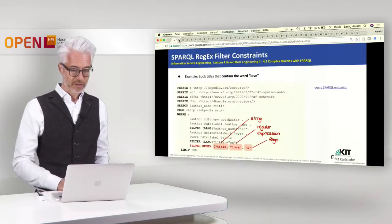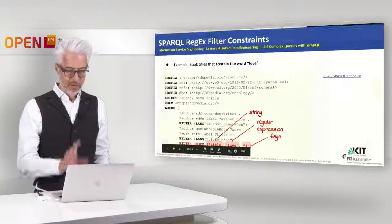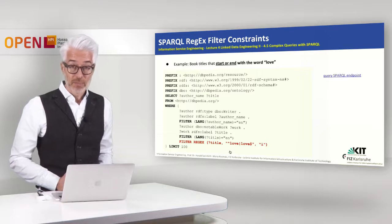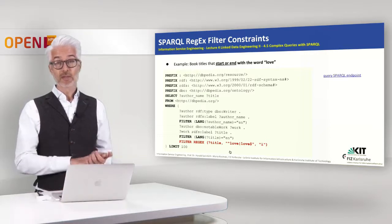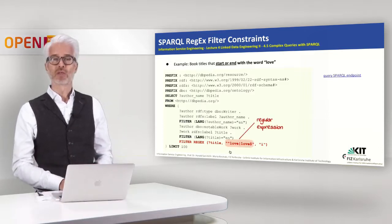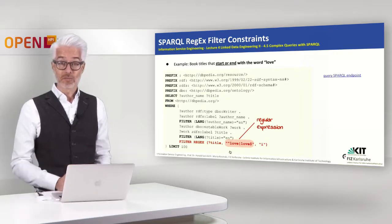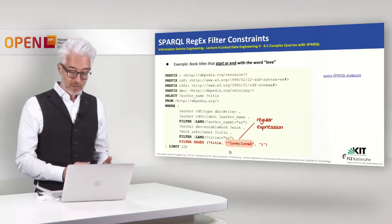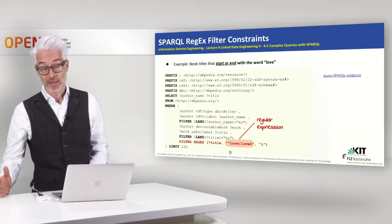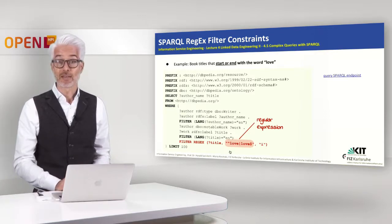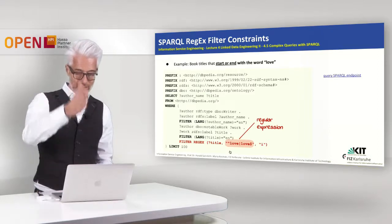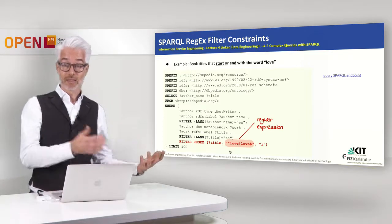Let's further refine the query to only retrieve book titles which either start or end with the word 'love'. In regular expressions, looking for an expression at the start of a line uses the caret operator (^), and at the end uses the dollar sign ($). These are combined by the vertical bar (|), which represents the OR. So the expression means 'love' stands either at the beginning or at the end of the title.